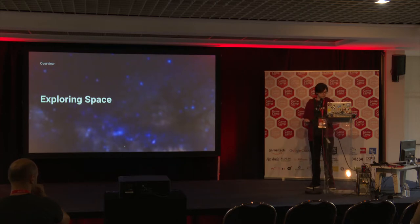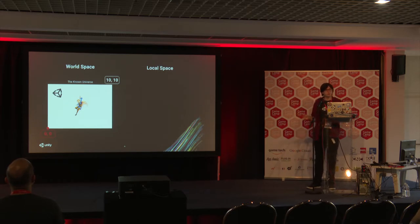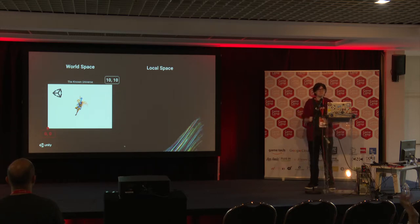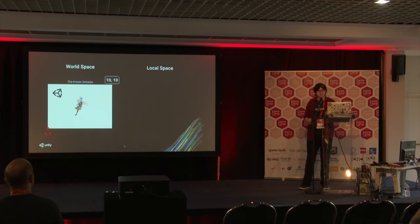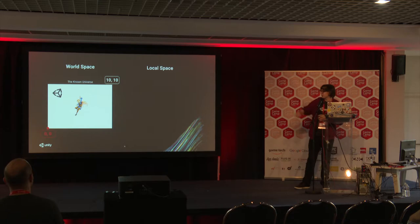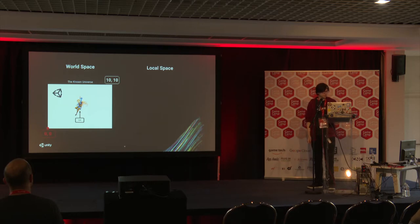Coming back to the absolute basics of AR — we're going to explore space. This is world space. If you've ever used Unity before, you know what this is. Here at the bottom we have 0, 0, and at the top we have 10, 10. So the Unity logo — that's going to be at 2, 8. Then we go to local space, which you'll experience if you've done things like parenting inside Unity. Here we have negative 5, 5 and positive 5, 5. We're localizing our space within this model, so all positioning is relative to that model. Now the Unity logo is at negative 4 and 4.